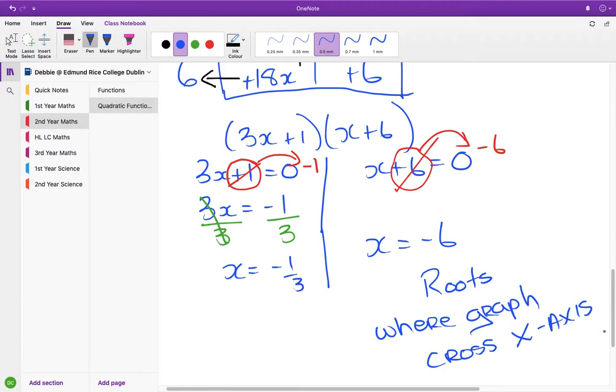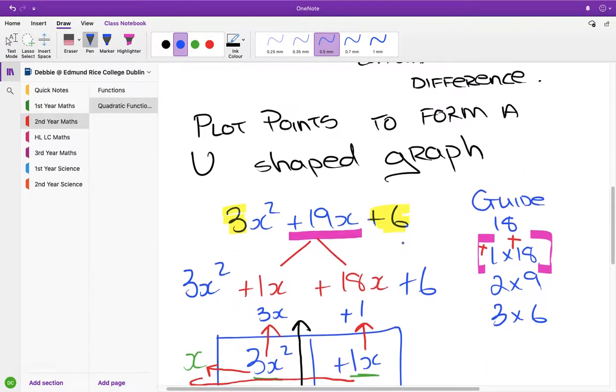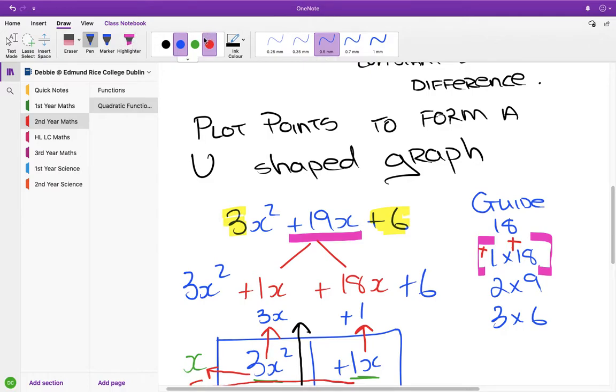So we go over to our graph now and check if it does indeed cross at minus 1 over 3 and minus 6. And then the other thing we should be able to check is, from a geometry point of view, the final term, the constant term, the one that doesn't have any x's on it, is also known as the y-intercept.